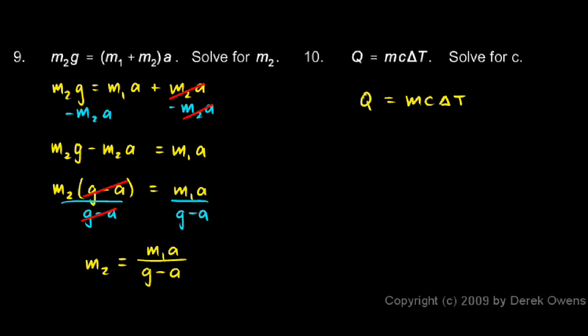To do this, I just need to isolate c. Right now c is multiplied by m and by ΔT, and so I just divide both sides by mΔT.